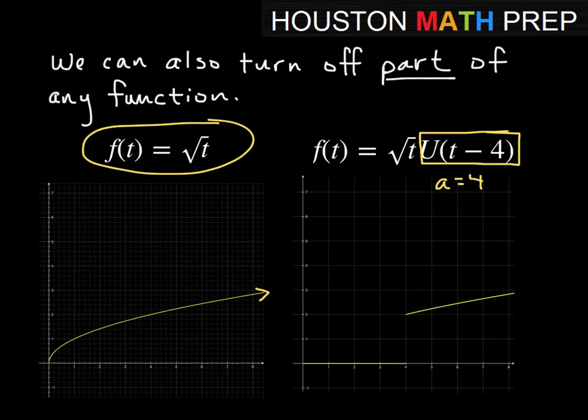If you multiply any function by the unit step function, think about what's going on here. If a is equal to 4, this value is going to be 0 when t is between 0 and 4. You can see what we've got here all the way up from the origin out to t equal to 4, we basically have the value of 0.